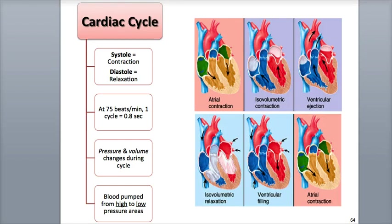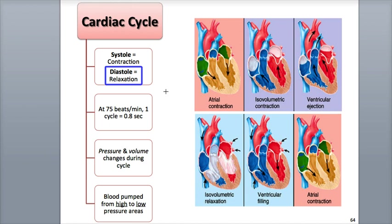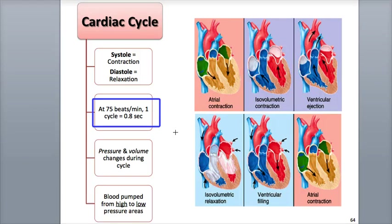All of the activities associated with one heartbeat is called the cardiac cycle. This includes both systole, or contraction, as well as diastole, or relaxation, of both the atria and the ventricles. In an average adult with a heart rate of 75 beats per minute, one cardiac cycle lasts about 8 tenths of a second, which includes the alternating contraction and relaxation of the atria and ventricles.